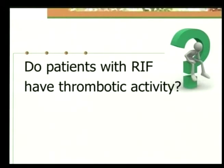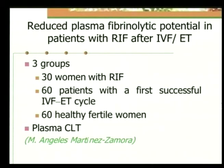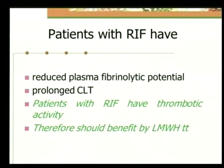The second question: do patients with recurrent implantation failure have thrombotic activity? Angela Martinez Zamora conducted a study on reduced plasma fibrinolytic potential in patients with recurrent implantation failure after IVF-ET. She compared plasma clot retraction time in three groups: 30 women with recurrent implantation failure, 60 patients with a first successful IVF-ET cycle, and 60 healthy fertile women. She concluded that patients with recurrent implantation failure have a reduced plasma fibrinolytic potential, evidenced by prolonged clot retraction time, and therefore should benefit from low molecular weight heparin treatment.